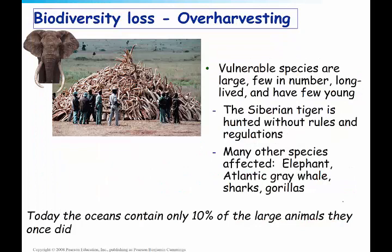Another cause of biodiversity loss is over-harvesting. The most vulnerable species are usually large, few in number, long-lived, and don't have a lot of offspring. The African elephant has been hunted mainly for its ivory, as you can see from the tusks piled up in the picture. The Siberian tiger was hunted without rules and regulations to near extinction. Today, the oceans contain only about 10% of the large animals they once did because of over-harvesting.